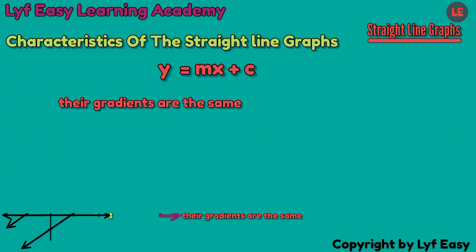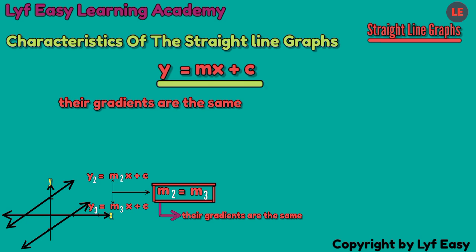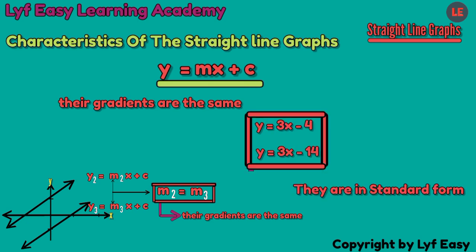To see that the straight line equations have the same gradient, they have to be both in standard form. Like these two equations, they are both in standard form so it is easy to see that the gradient is the same.